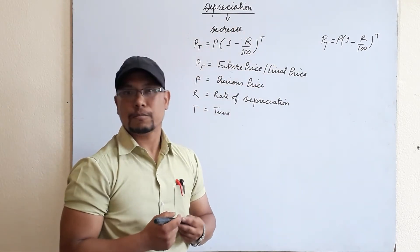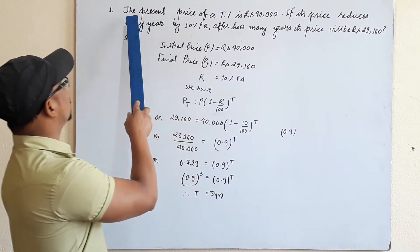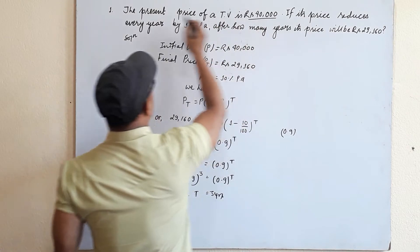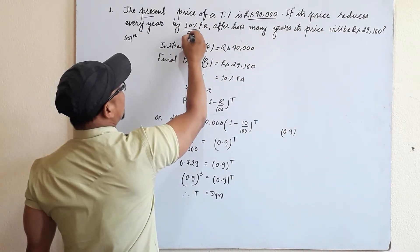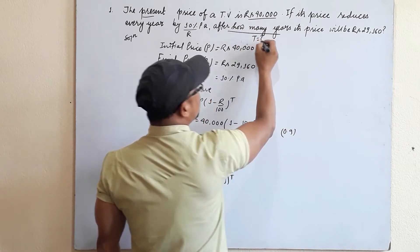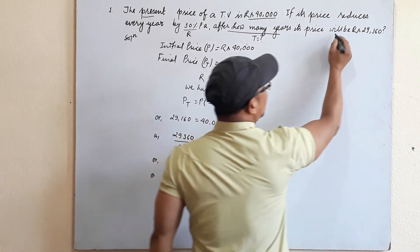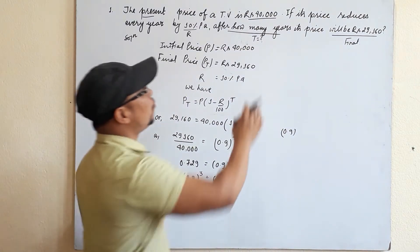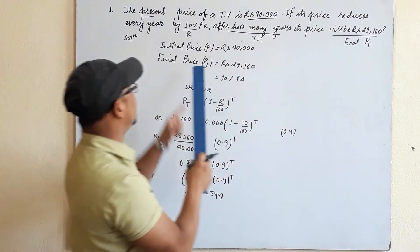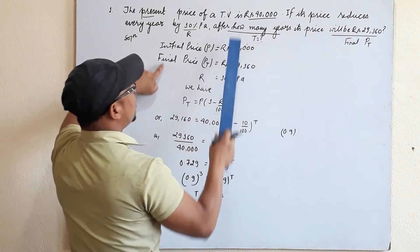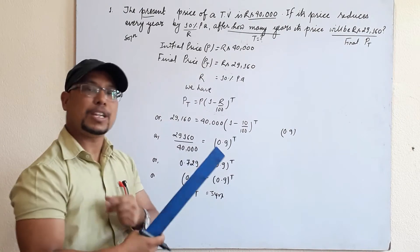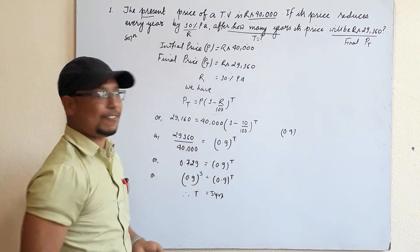Problem 1: The present price of a TV is Rs 40,000. Its price reduces every year by 10%. After how many years will the price be Rs 29,160? Here, the present price P = 40,000, and the final price PT = 29,160. Distinguishing P and PT is important. Since the price 'will be' Rs 29,160, that is the future price PT, and we need to find T.